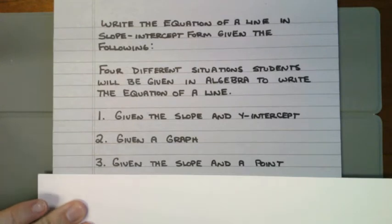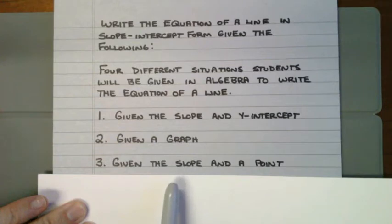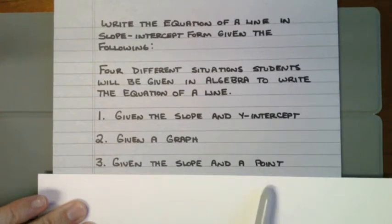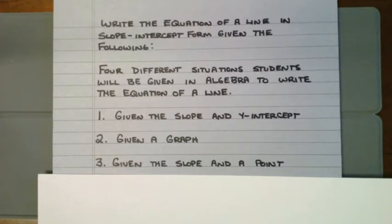The next thing we need to go over is writing the equation of a line in slope-intercept form when you're given the slope and a point on that line. The two things we need are a slope and a y-intercept. In this situation, the y-intercept is what we're missing. We're going to use the formula for slope-intercept form, y equals mx plus b, and figure out what the y-intercept is.